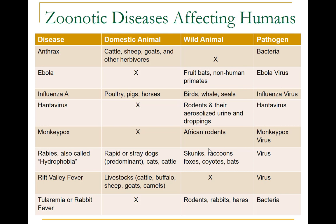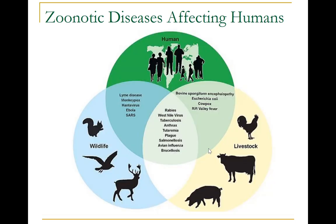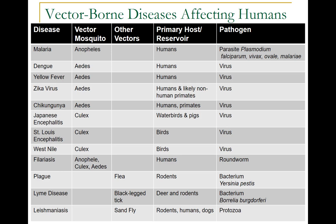In this diagram you can visually view the host and reservoir information from the previous table. Some zoonotic diseases spread by wildlife are Lyme disease, hantavirus, Ebola, and SARS. Diseases spread by livestock include cowpox, Rift Valley fever, E. coli, and mad cow disease. Other diseases of animal origin include rabies, anthrax, plague, avian flu, and TB.